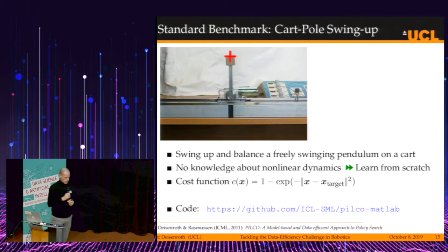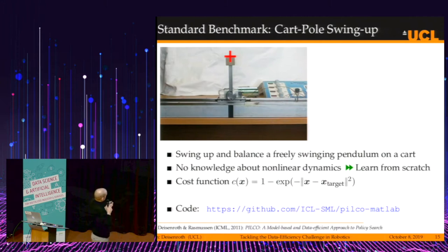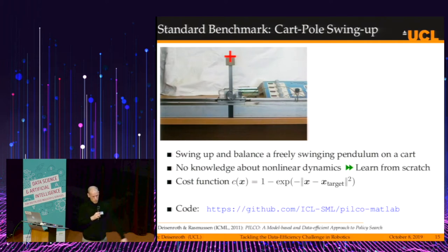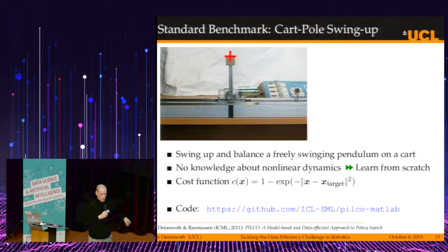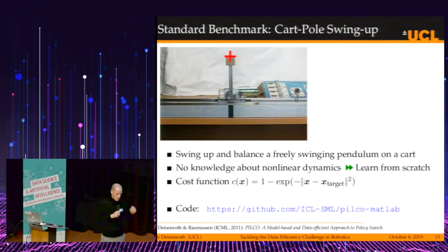We initially looked at a standard benchmark problem: the cart-pole swing-up. There's a cart running on a track with a freely swinging pendulum attached to it. The idea is to push the cart left and right to swing the pendulum up and balance it in the middle of the track at the red cross. We make no assumption about the nonlinear dynamics — we want to learn from scratch, only from collected data. The cost function is a saturating cost penalizing the Euclidean distance between the tip of the pendulum and the red cross, with no penalties on controls or velocities.